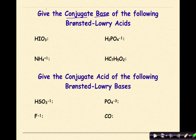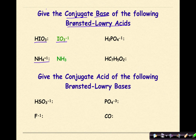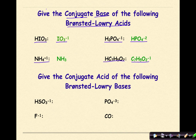Give the conjugate base of the following Bronsted-Lowry acids. HIO₃ — the conjugate base is IO₃⁻, differing by one hydrogen. NH₄⁺ gives NH₃, again differing by one hydrogen. H₂PO₄⁻ loses a hydrogen to give HPO₄²⁻. And HC₇H₅O₂ gives a conjugate base of C₇H₅O₂⁻.